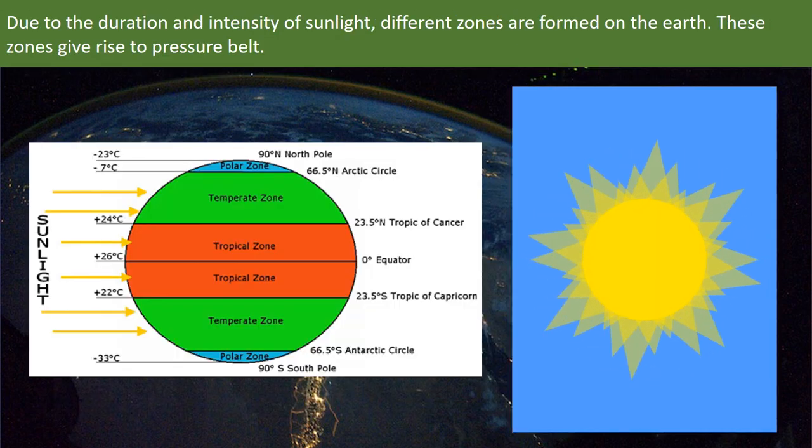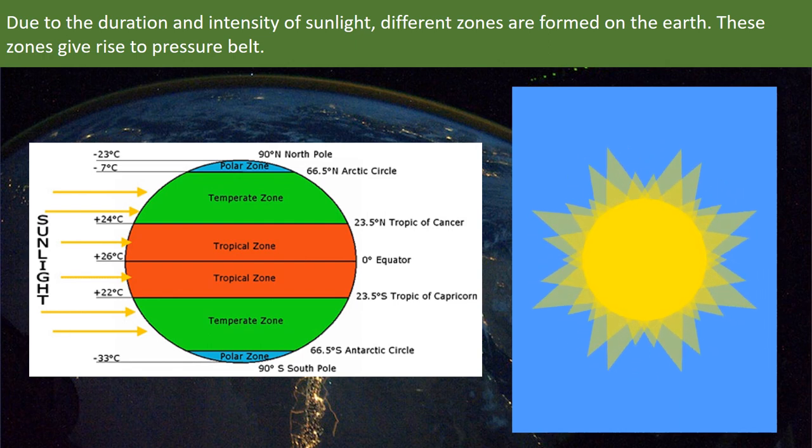Due to the duration and intensity of sunlight, different zones are formed on the Earth. They are torrid zone, temperate zone and polar zone or frigid zone. These zones give rise to pressure belts. The torrid zone is the closest to the equator and is the hottest of the three zones. The temperate zone has temperatures ranging from warm to cool. The frigid zone is the coldest of the three zones.